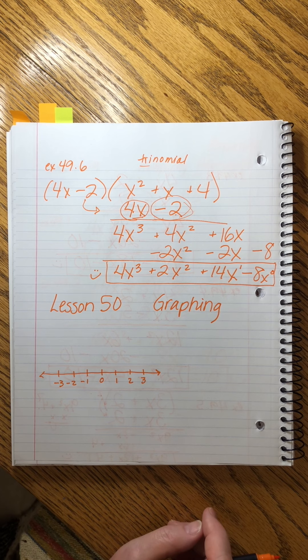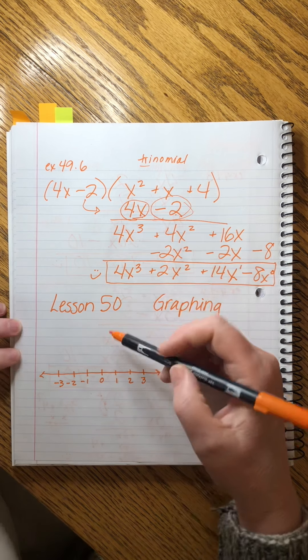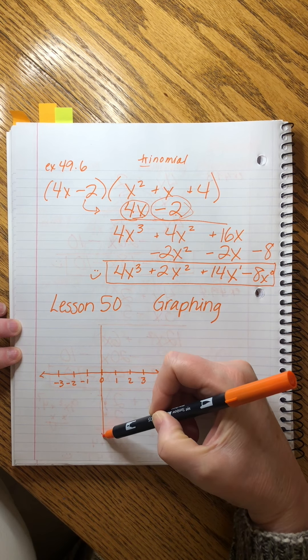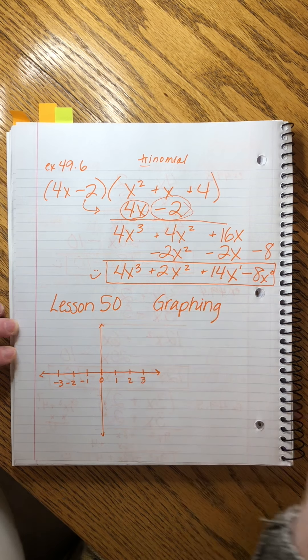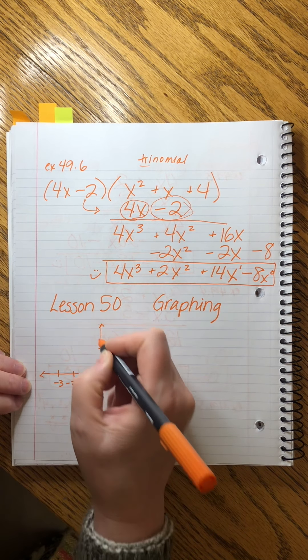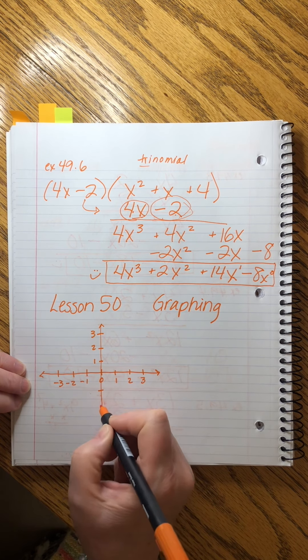And what we're going to do that's a little different is we're going to take another number line, and we're going to lie it over the top of this number line like this. So they make a grid. And we're going to do the same thing. We're going to have positive numbers, and I'm going to make the positive numbers go up, and then the negative numbers are going to go down.